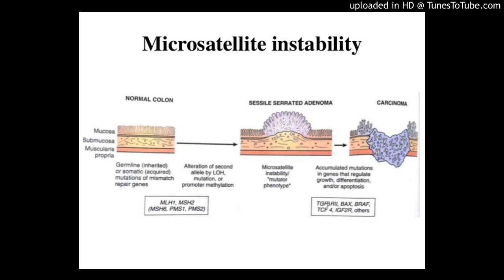Loss of expression of 2 MMR proteins, namely PMS-2 and MLH-1, has been identified in most MSI-H patients of our study, of which 86% were 30 years of age. This is in contrast to observations in previous studies where loss of PMS-2 and MLH-1 proteins was observed in older (70 years) patients with MSI-H tumors, and in younger patients, MSI-H status was associated with loss of MLH-1, MSH-2, and MSH-6.